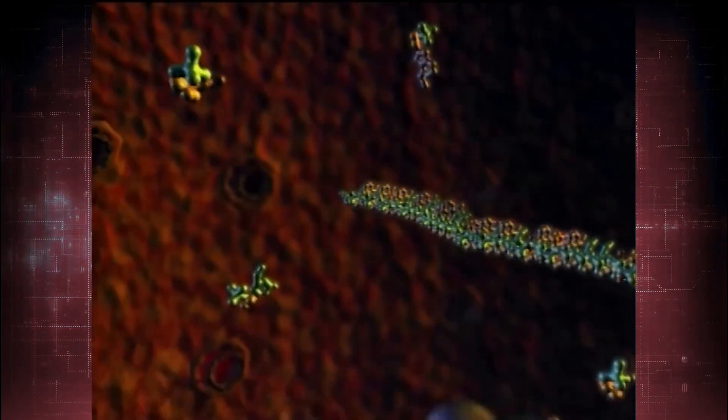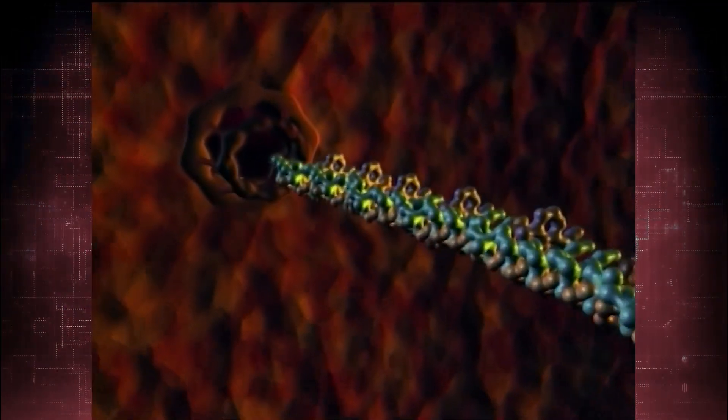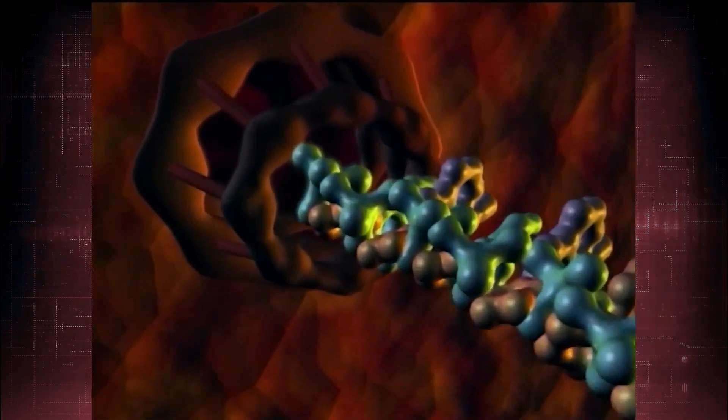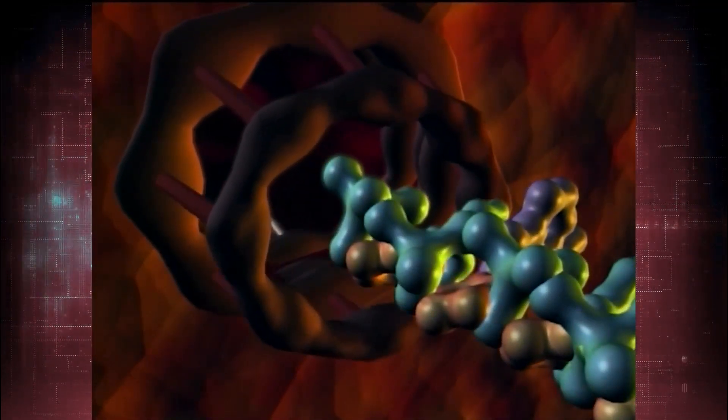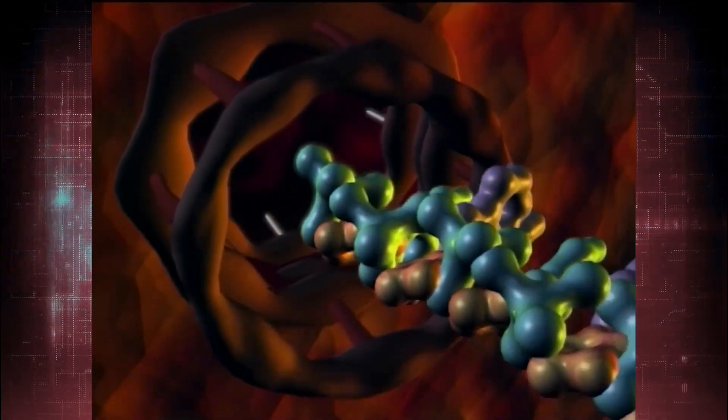When transcription is complete, the slender RNA strand carries the genetic information through the nuclear pore complex, the gatekeeper for traffic in and out of the cell nucleus.